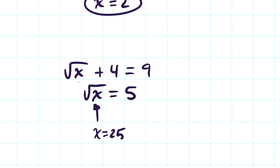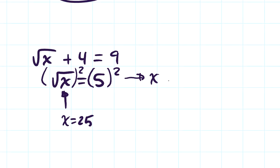Another way I can think about this is I could square both sides. If I square the left-hand side, this becomes an x. And then on the other side, if I square 5, I get 25. So in either case, I'm pretty safe to say that x is 25, and the square root of 25 is 5, and 5 plus 4 is 9. So it does check as well.